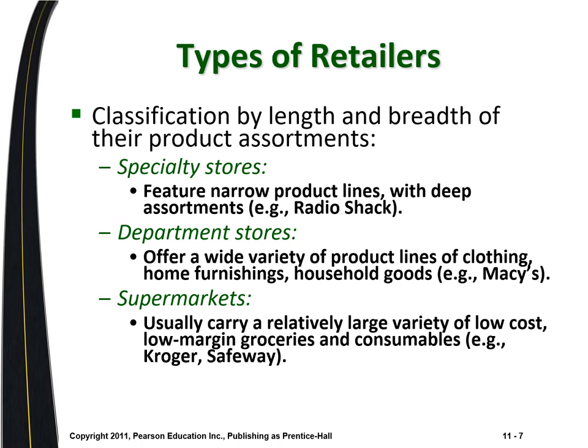A second way to differentiate retailers is by product assortment available in their store. You can have very narrow specialty stores — like Radio Shack, which only sells electronics, a narrow product line but a very deep assortment — versus a supermarket or department store like Macy's or JC Penney, where you have a variety of different things: clothing, home furnishings, household goods. The name 'department store' itself indicates very different departments selling different arrays of products.